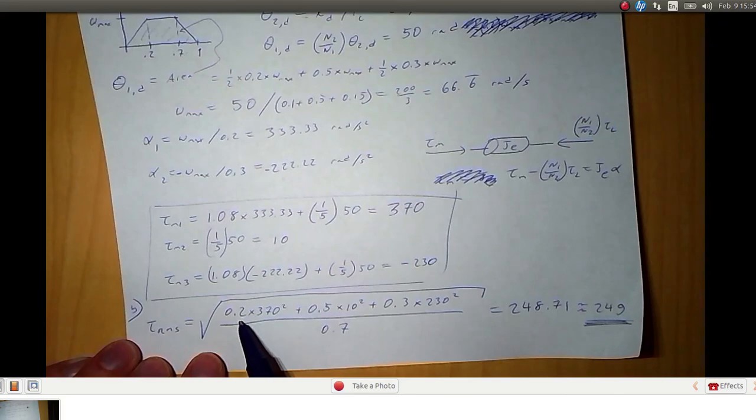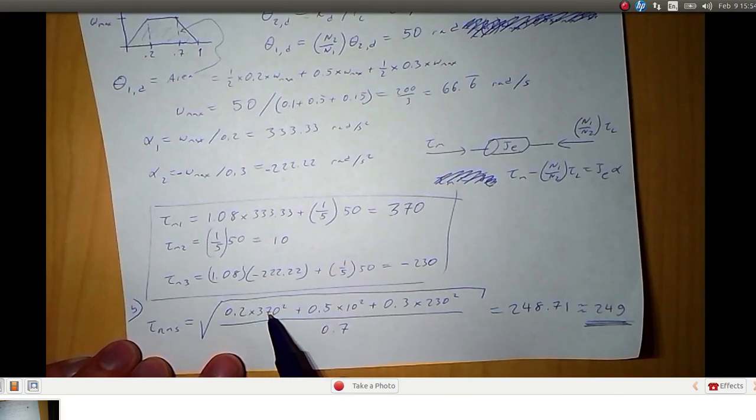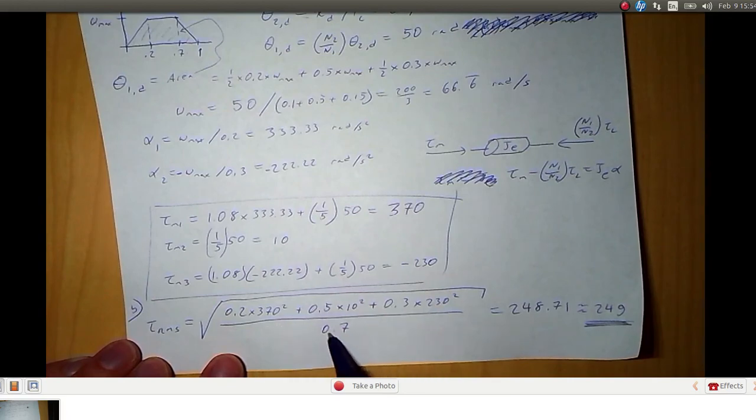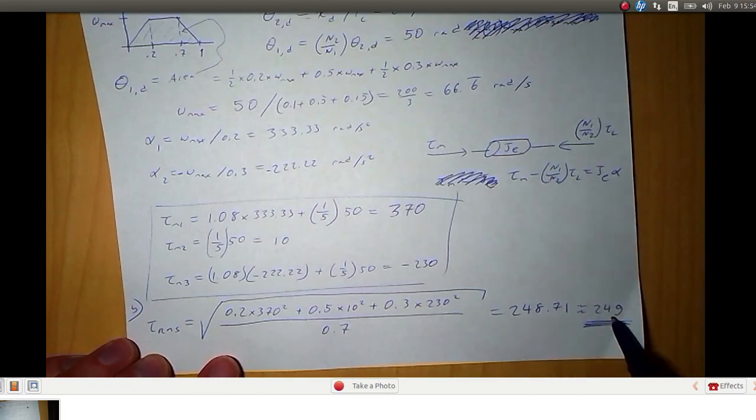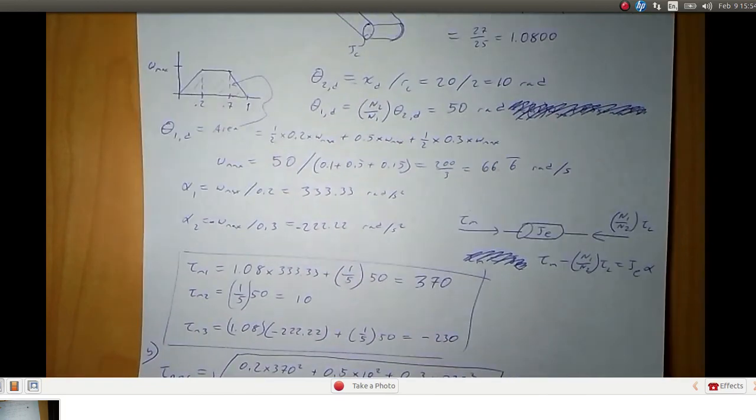RMS torque, here's the equation. It's the duration multiplied by the torque squared for all the different portions and then divide that sum by the total time taken. Take the square root of that quotient and we end up with 249 is the RMS torque for this motion.